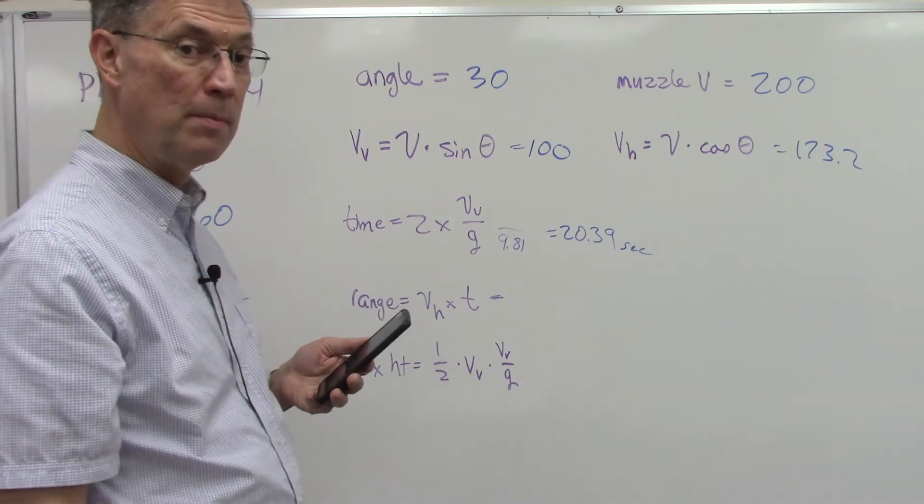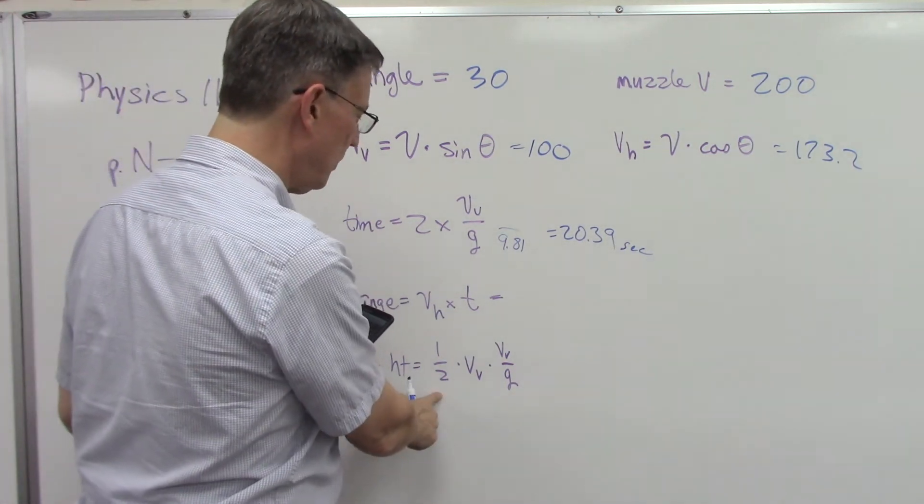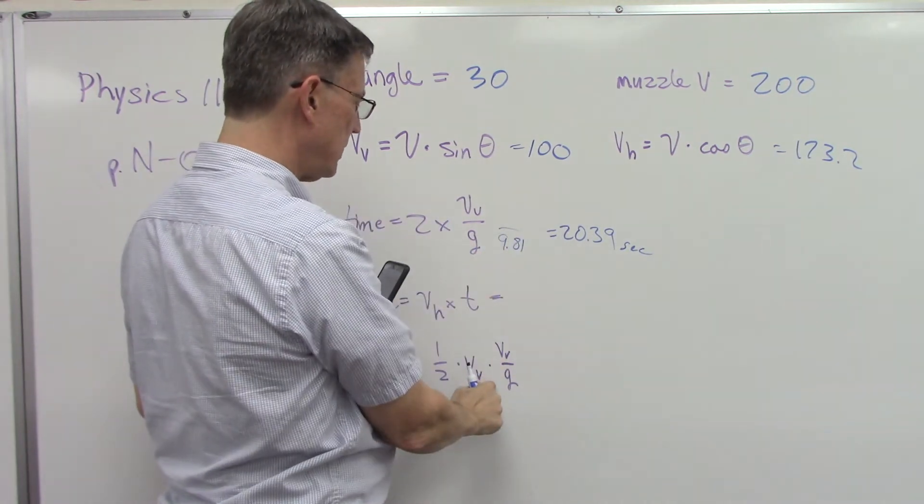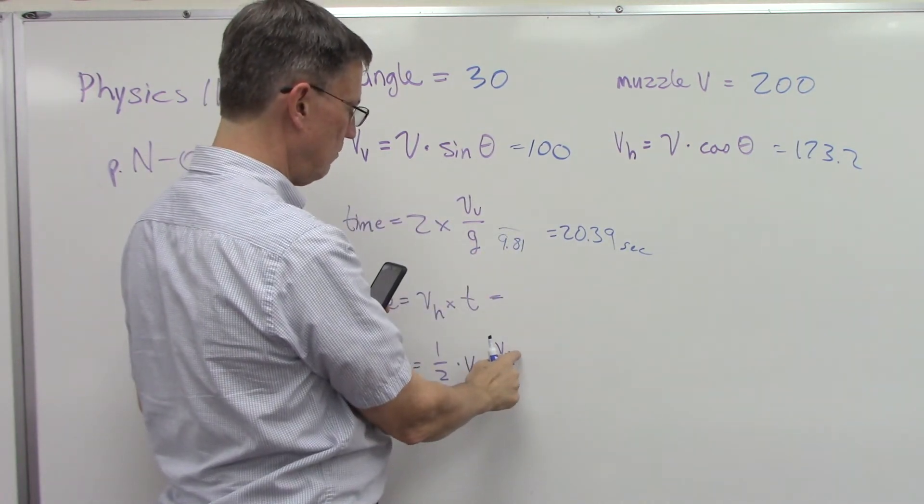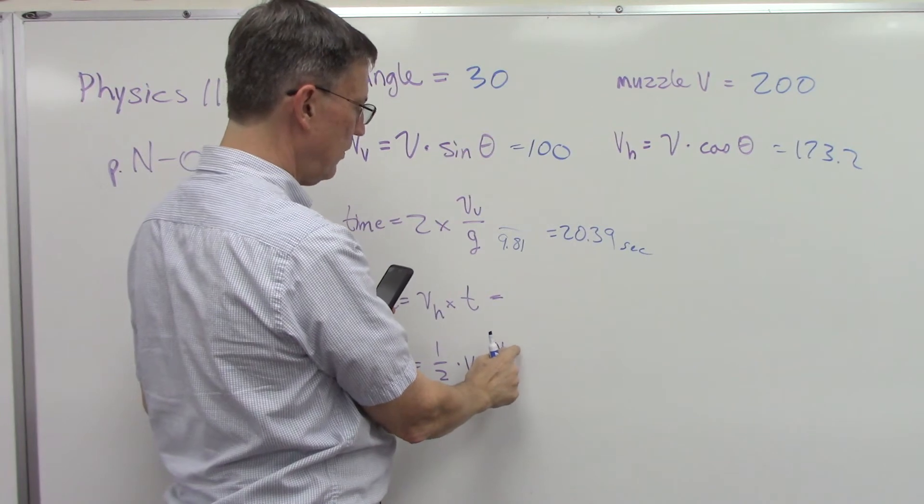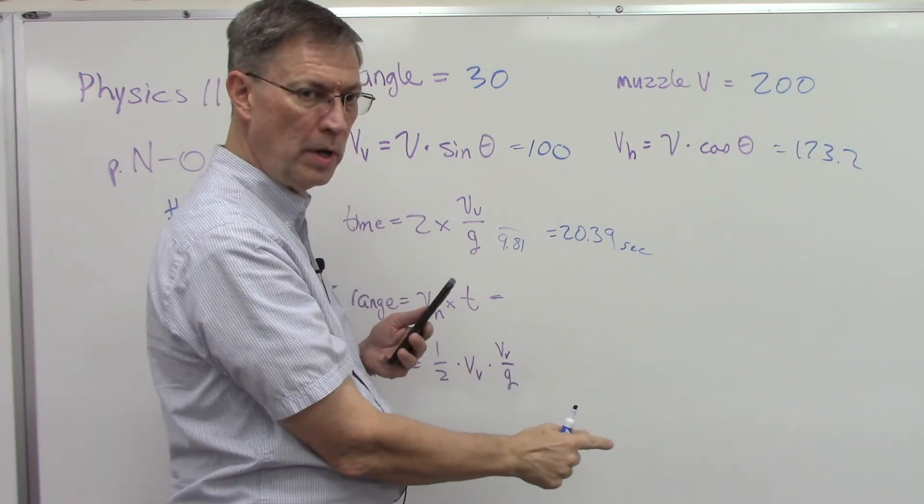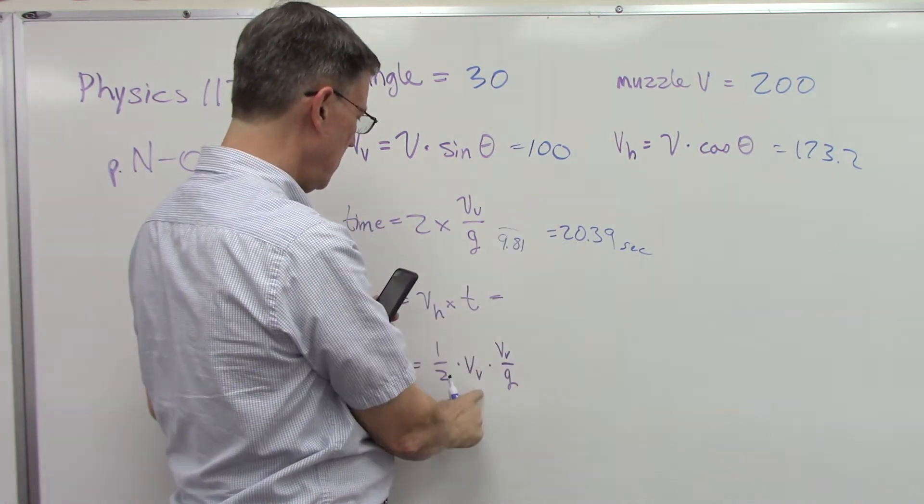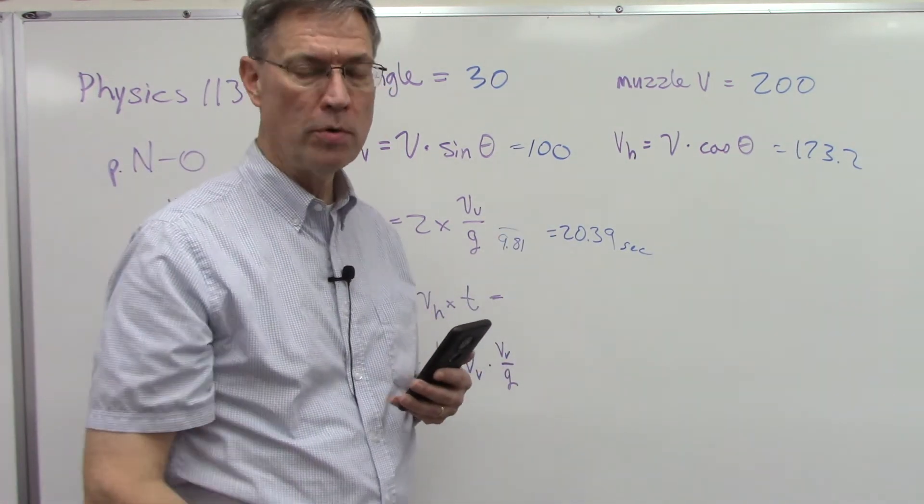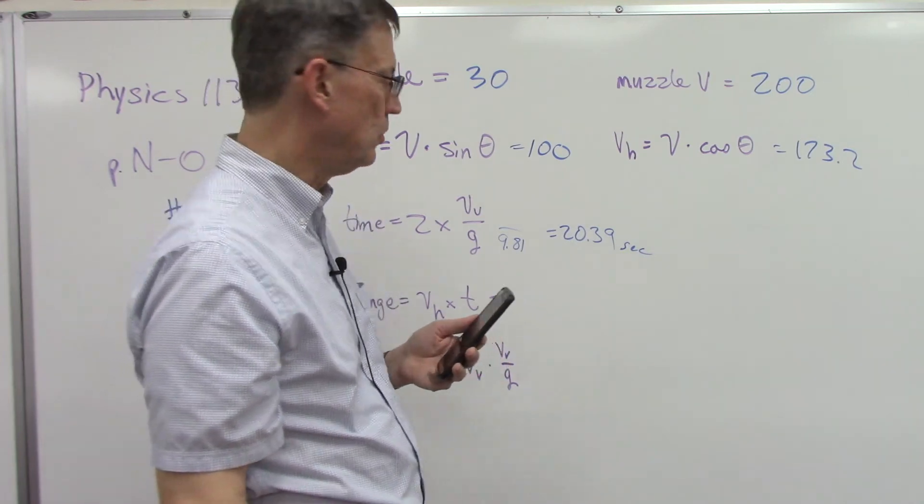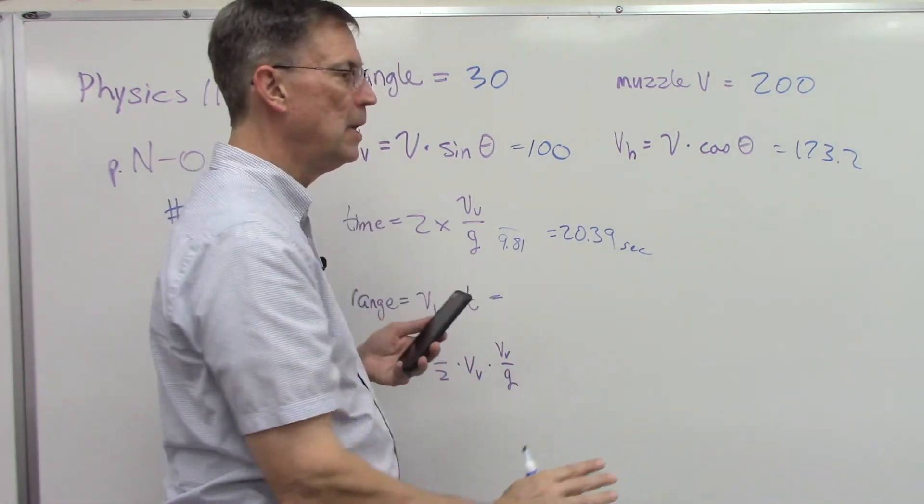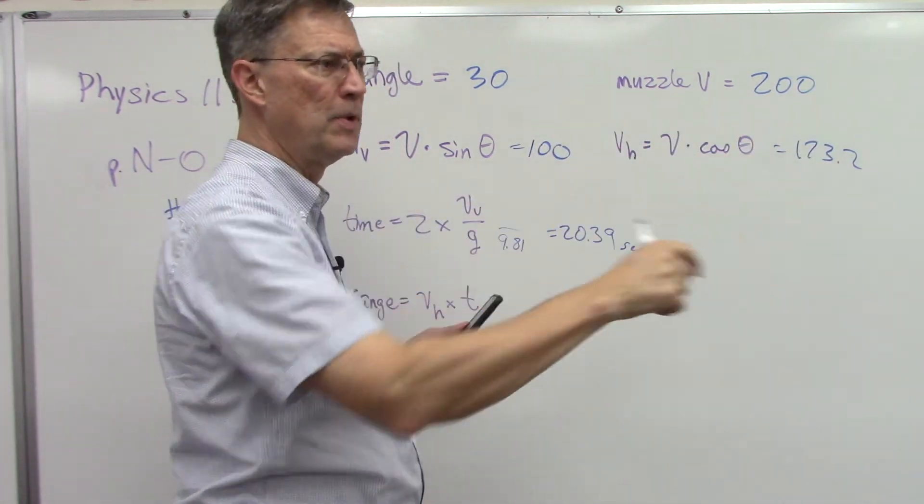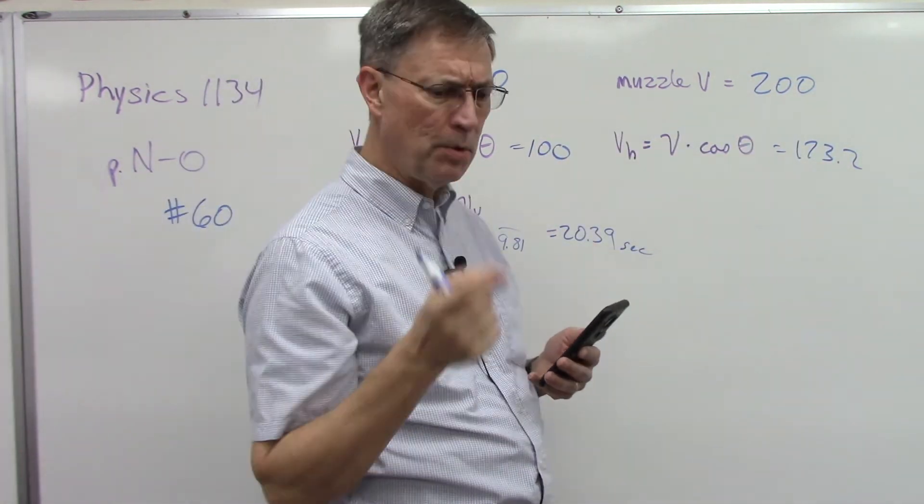And then for the maximum height we have a formula right here. We take the vertical velocity, 100, times, and again we're going to take the vertical velocity divided by 9.81. Take that answer times 100 in this case, times one half, or divide by two, you could just divide by two. And that will be how high, the maximum height before it started to crest and come down.